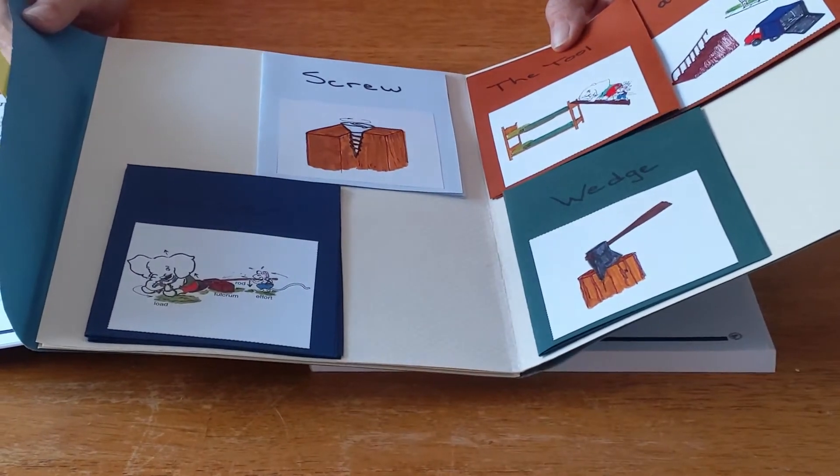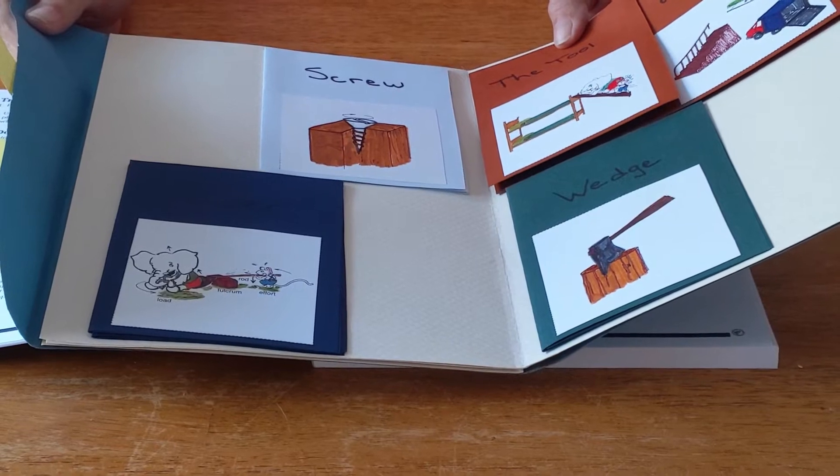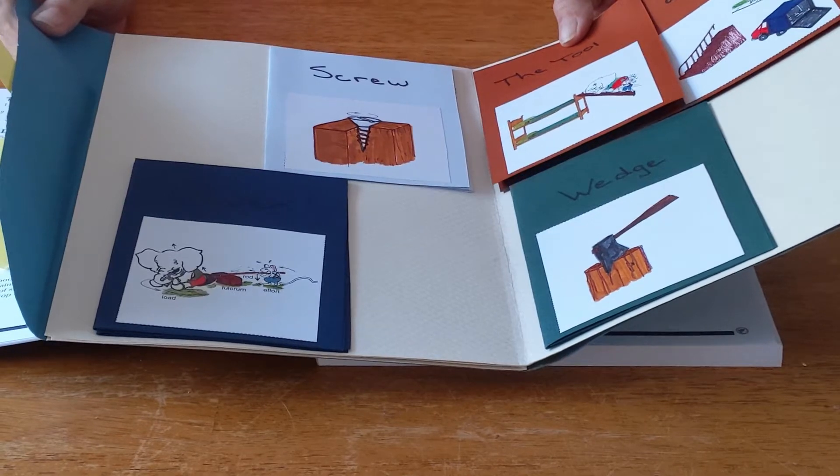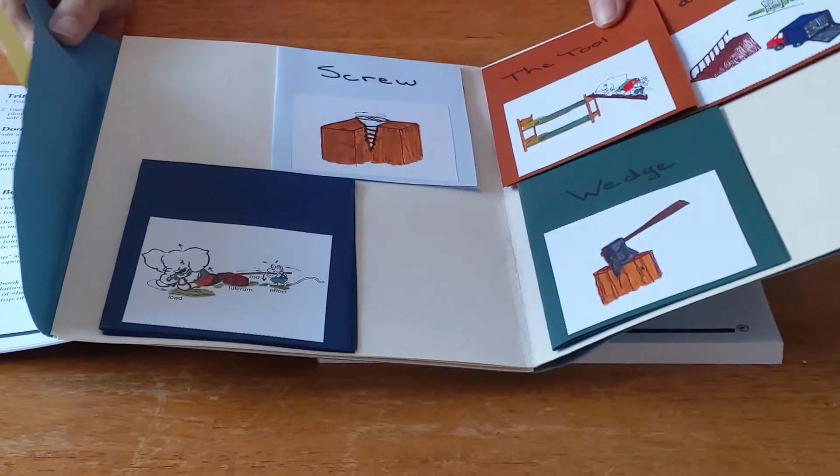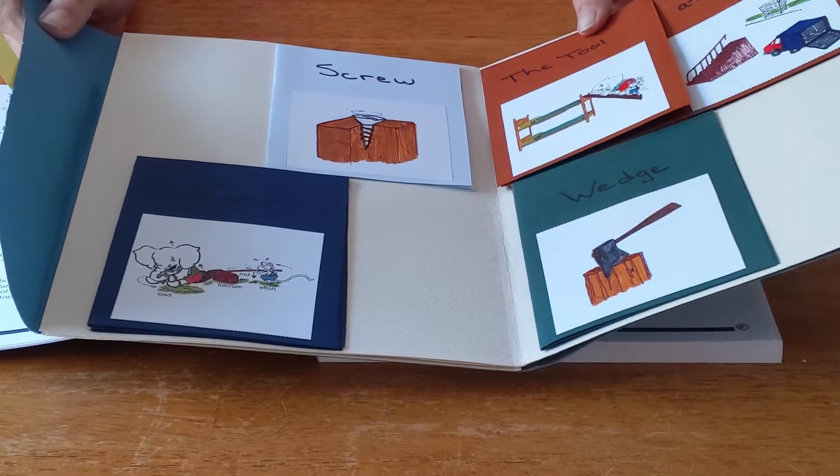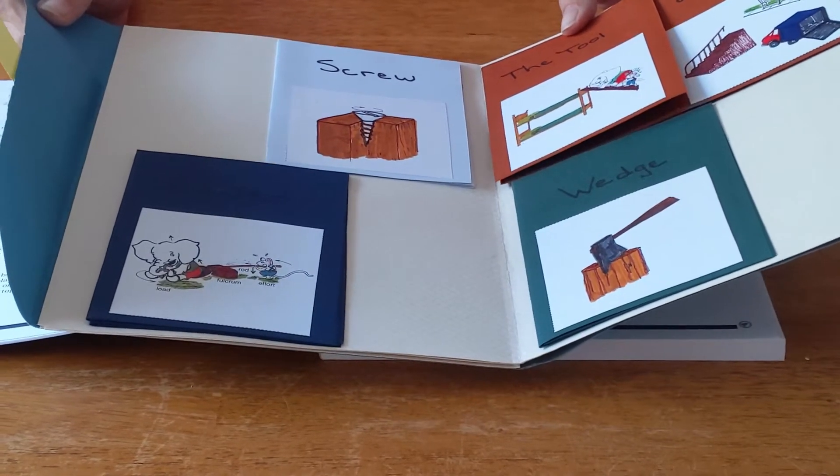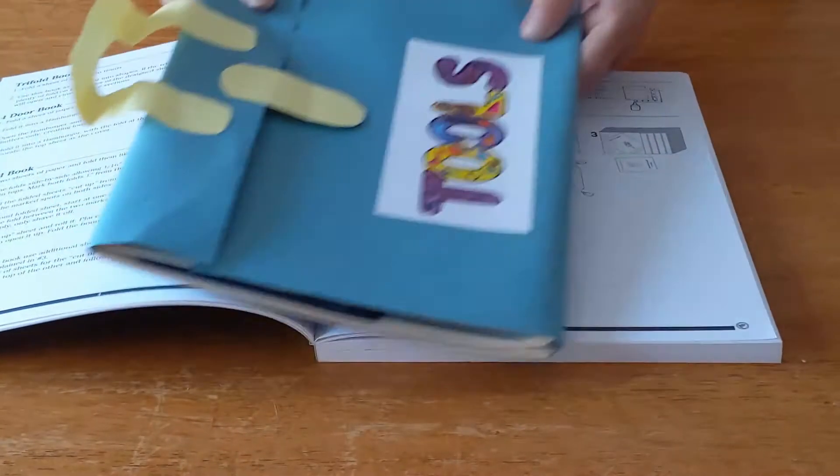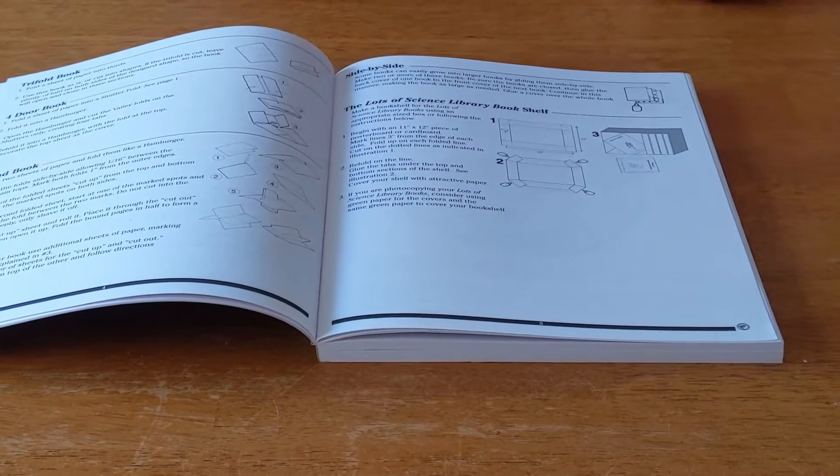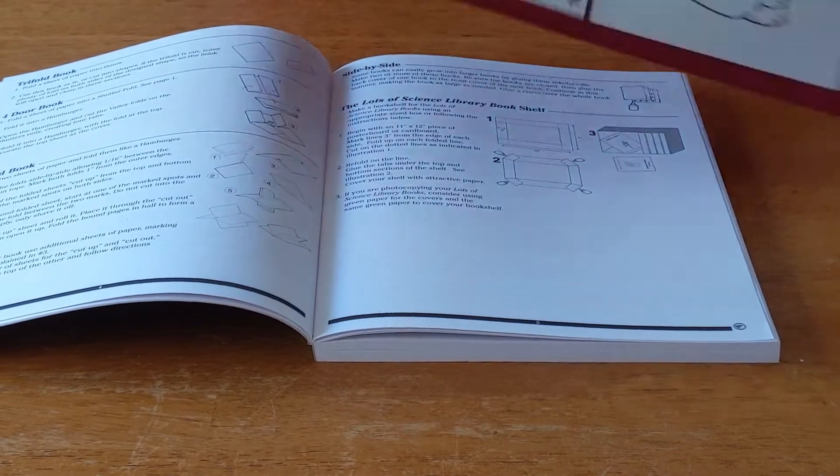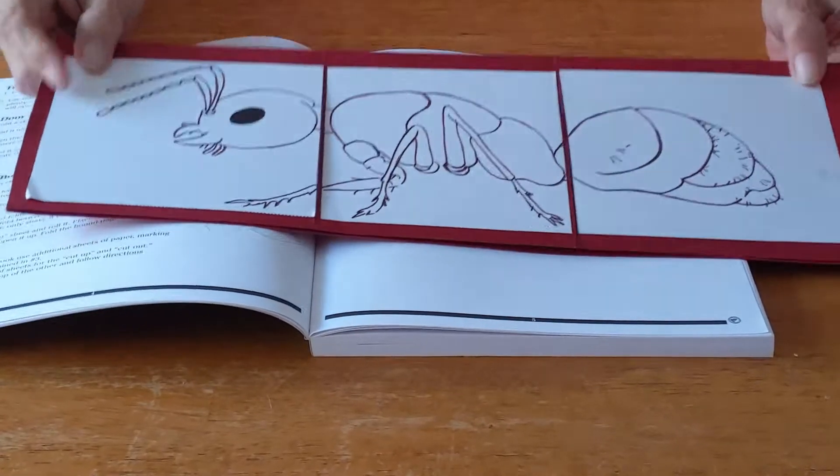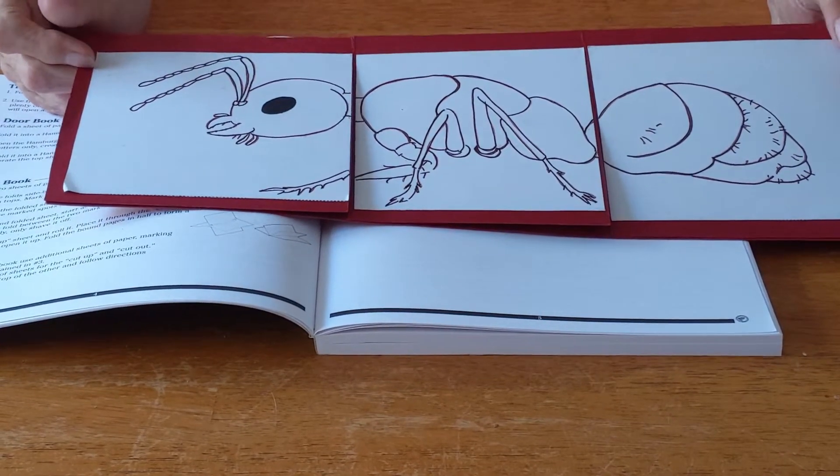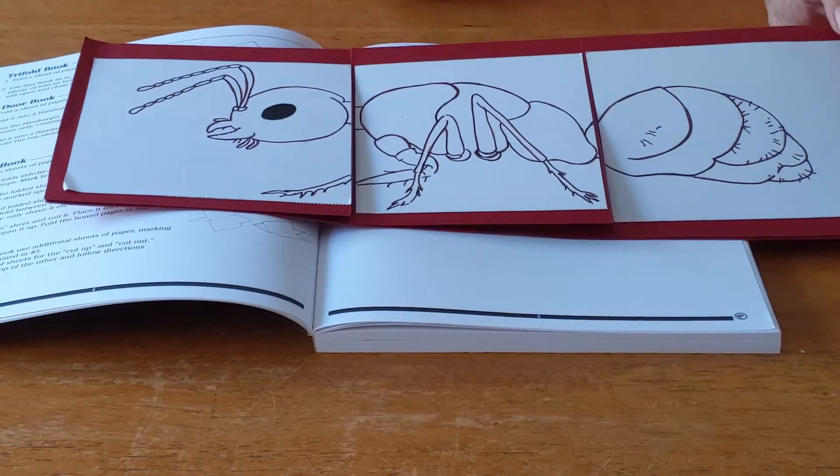You may have also heard them used as lap books. Lap books is a name that a homeschool mom gave to these graphic organizers when she was teaching Dinah Zeit's methods to homeschoolers. Technically they are called graphic organizers. They take the information that we are trying to teach to the children and organize it in a manner that makes sense.